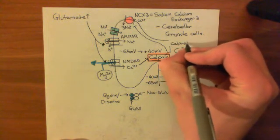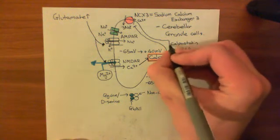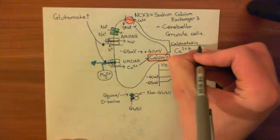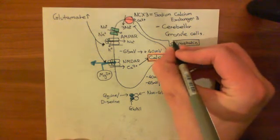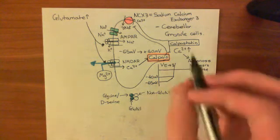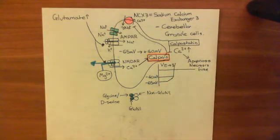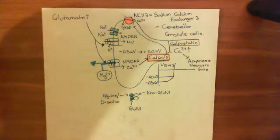And it is being looked into at the moment whether calpastatin could be helpful to give to people who have just suffered a stroke to try and reduce the amount of neuronal death, the amount of excitotoxicity that they suffer. So calpastatin is the name of that endogenous protein. And there's a lot of research going into whether calpastatin would be a useful drug to use.